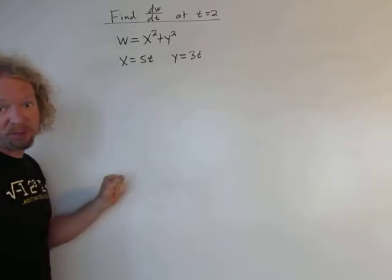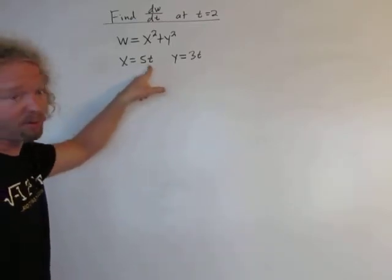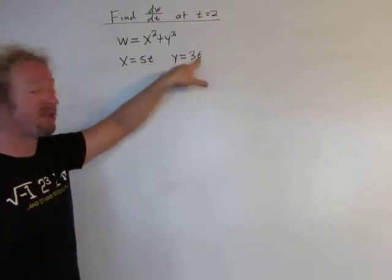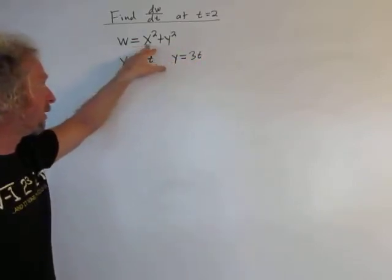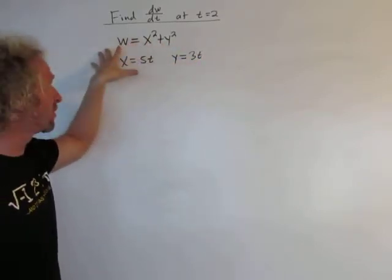Now, I said it's a function of two variables, but you can also think of it as a function of one variable. Because x is a function of t, y is a function of t, so w, well, if both x and y are functions of t, so is w.